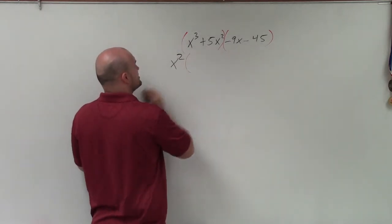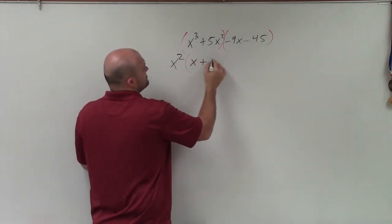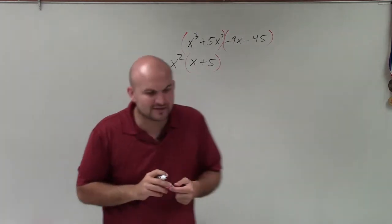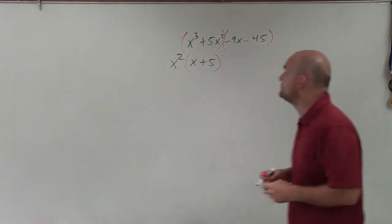And when factoring out an x squared, I'm just going to be left with an x plus 5, right? So by factoring out that x squared, I'm left with that x plus 5.